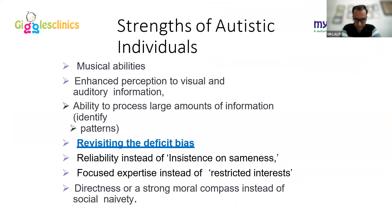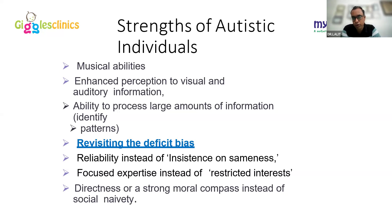It is important to discuss autism strengths because ADHD and autism pictures often overlap, making it difficult to differentiate. Autistic individuals may have musical abilities, enhanced visual and auditory perception, ability to process large amounts of information, and identify patterns. They may also show fixations on sameness — restricted interests and stereotypic patterns — which can actually be considered strengths if channeled correctly.